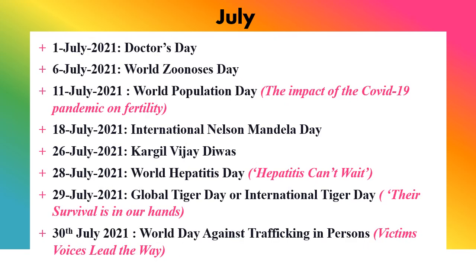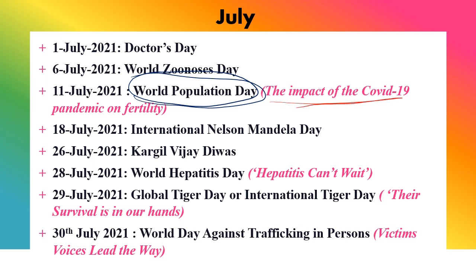Finally, July: 1st July is Doctors Day. 6th July is World Zoonosis Day. 11th July is World Population Day. Students preparing for exams in August should note all the important days in July and their themes — these will 100% be asked. World Population Day's theme was 'The Impact of the COVID-19 Pandemic on Fertility.'